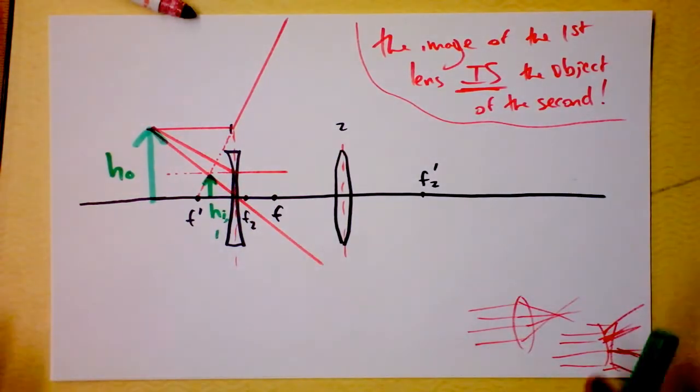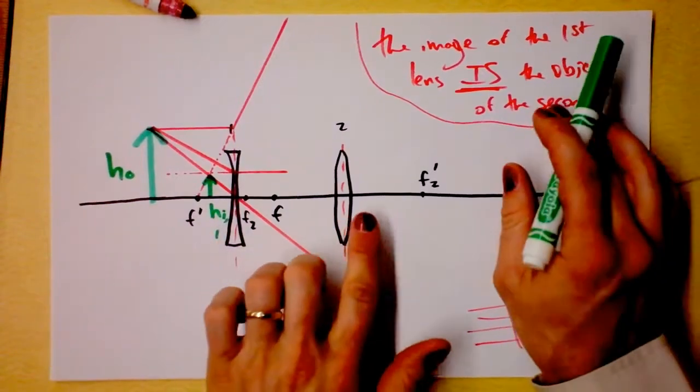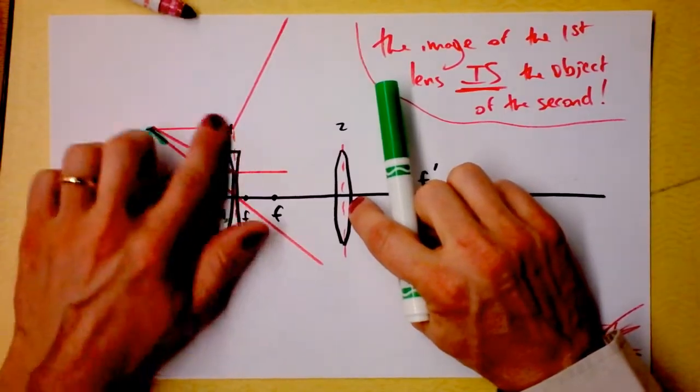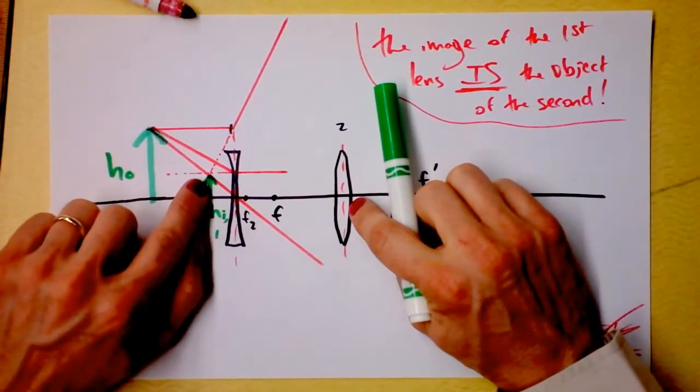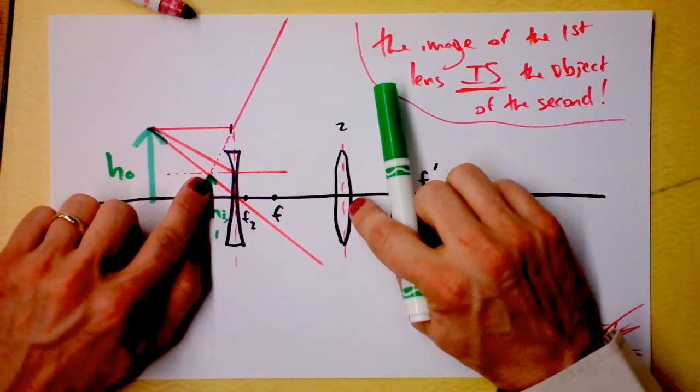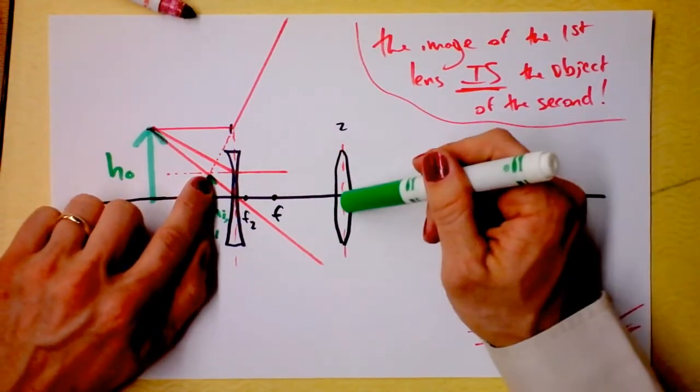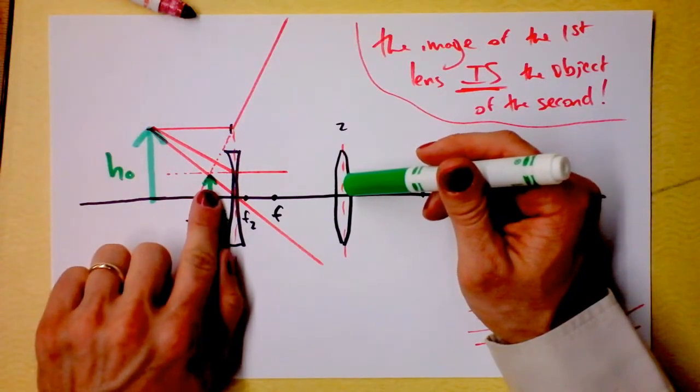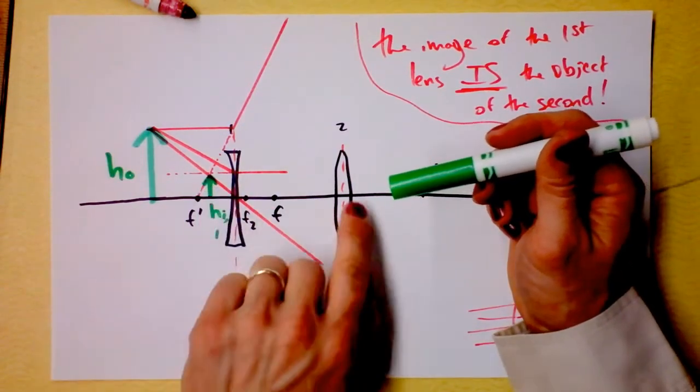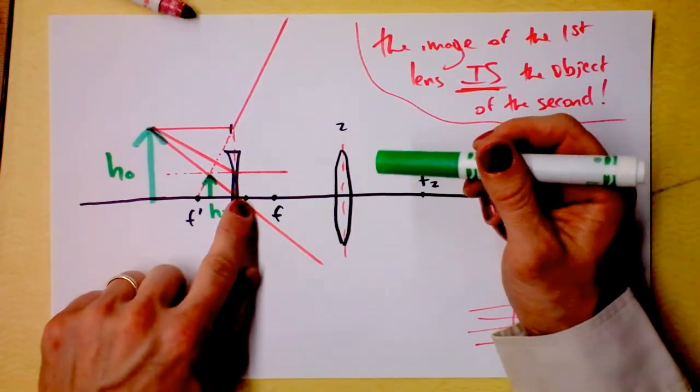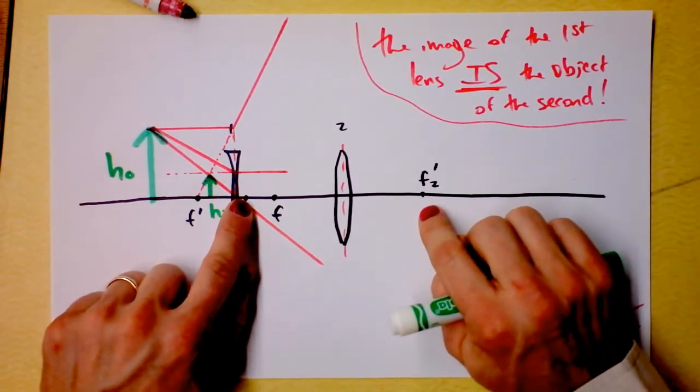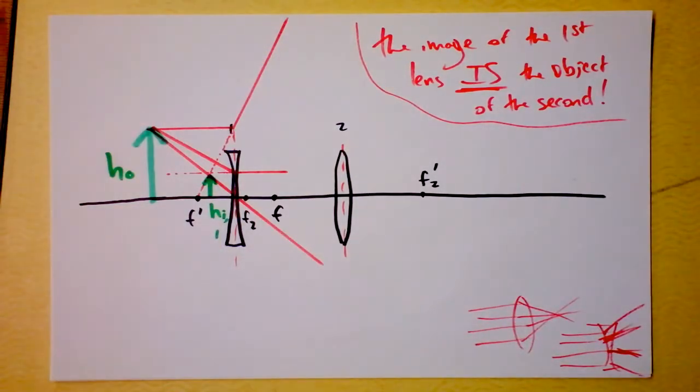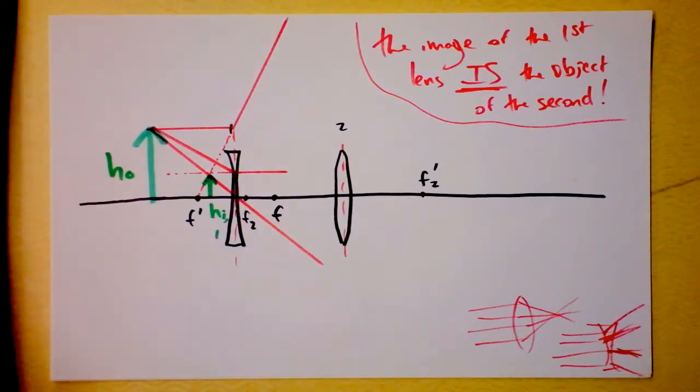Because that's the image of the first guy. Now it looks to this lens as if there is actually something right here. This lens doesn't know about these crazy optics over here. This lens thinks there's an actual object right here that is causing diverging rays to come at it. So now we forget everything that we've done to get the location of this image and we use this image as the object for that lens. And that's going to require F2 and F2 prime. So I'll draw some lines with that, but I'm going to use orange.